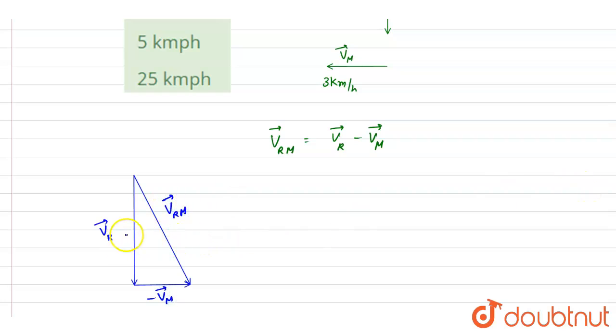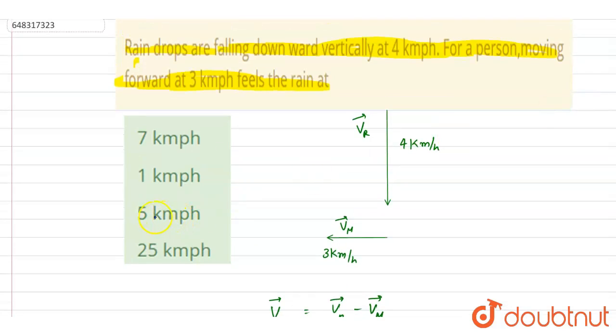So if you see, this is 4 and this is 3, and you can just calculate this with the use of Pythagoras theorem. So it is 5 kilometers per hour. If you see, C is the correct answer. Thank you.